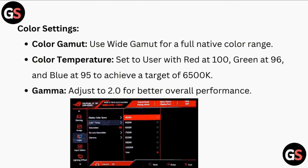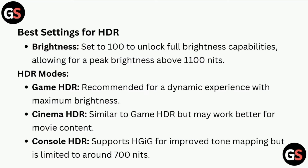For HDR best settings, set brightness to 200 to unlock full brightness capabilities, allowing for peak brightness above 1100 nits. For HDR modes, Game HDR is recommended for a dynamic experience with maximum brightness. Cinema HDR is similar to Game HDR but may work better for movie content.